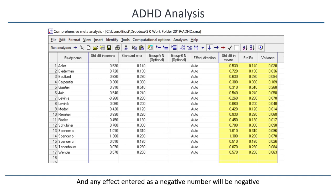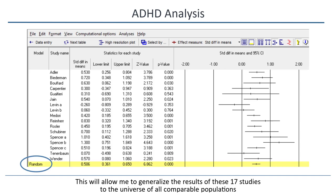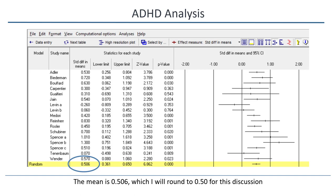I click Run Analysis, and this is the main analysis screen. I'll select Random Effects at the bottom. This will allow me to generalize the results of these 17 studies to the universe of all comparable populations, and it allows me to discuss the heterogeneity in effects. First, we want to have a look at the mean effect size. The mean is 0.506, which I'll round to 0.50 for this discussion.